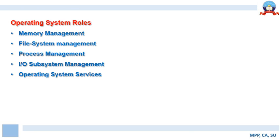Moving ahead, let us identify some important operating system roles. The operating system is responsible for memory management, file system management, process management, IO subsystem management, and other operating system services. We will discuss each of these roles in subsequent slides.